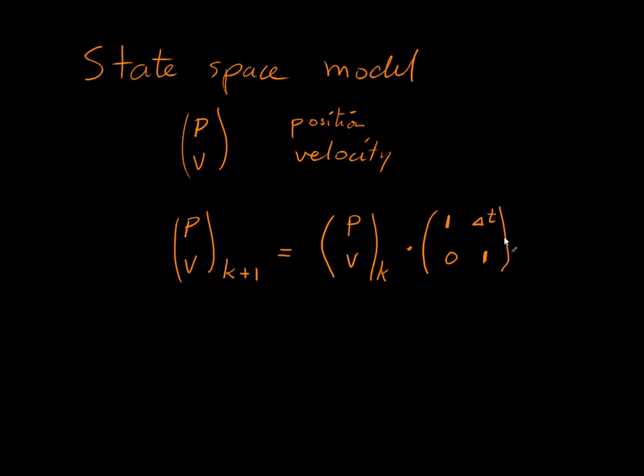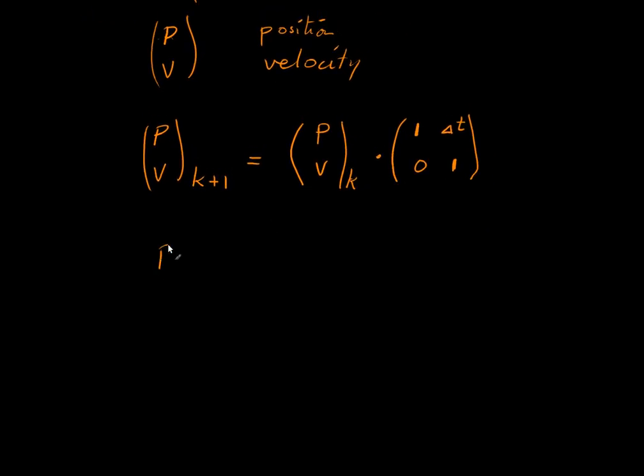If we multiply this out, we'll have that the position at K plus 1 is equal to the position at K plus the velocity at the K frame times the time step, which is exactly what we have seen before. And within this model, we don't assume that the velocity changes. So the velocity at K plus 1 is the same as the velocity at time step K.